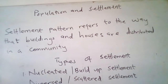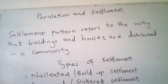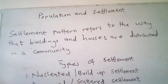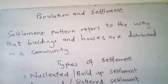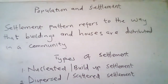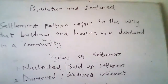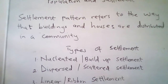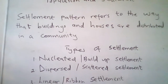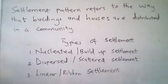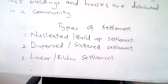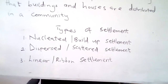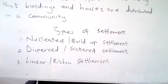Apart from the two mentioned, there is another settlement pattern where buildings are built up in a core area — it looks like the houses are in groups. From the above discussion, settlement pattern refers to the way that buildings and houses are distributed in a community. The nature of settlement in Ghana is grouped into three types.